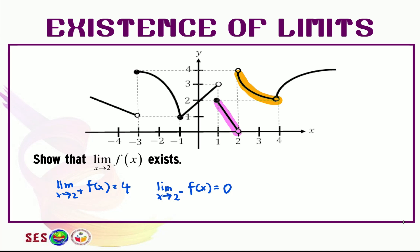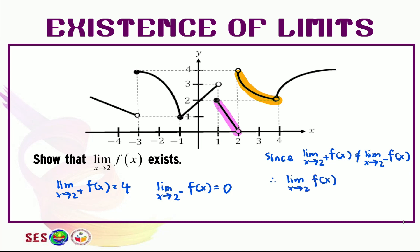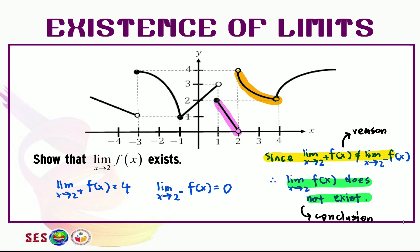No — that's correct. To answer this type of question, we must write the reason and its conclusion. Since the limit as x approaches 2 from the right for f(x) is not equal to the limit as x approaches 2 from the left for f(x), therefore the limit as x approaches 2 for f(x) does not exist. This statement is our reason, and this statement is our conclusion.